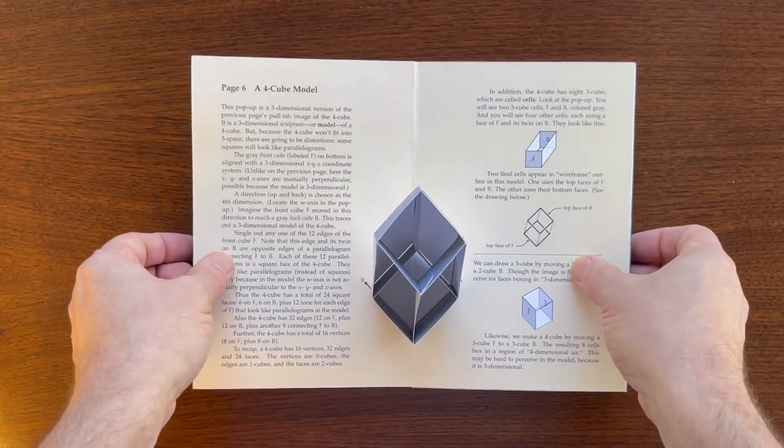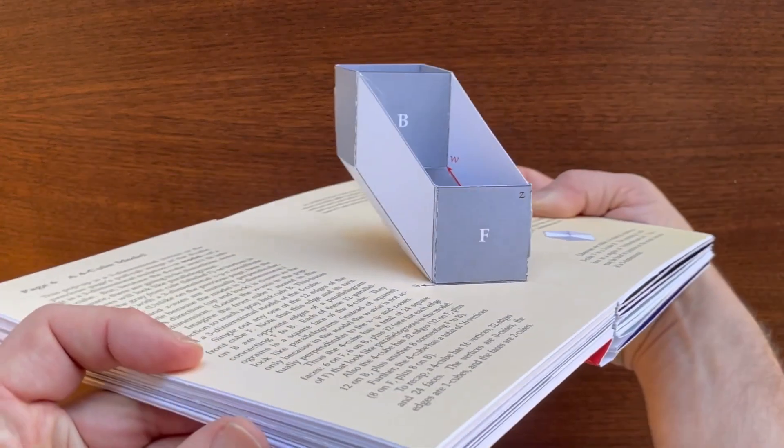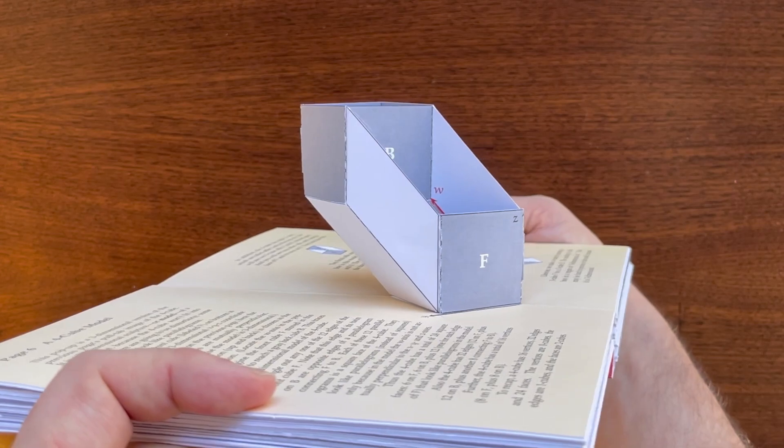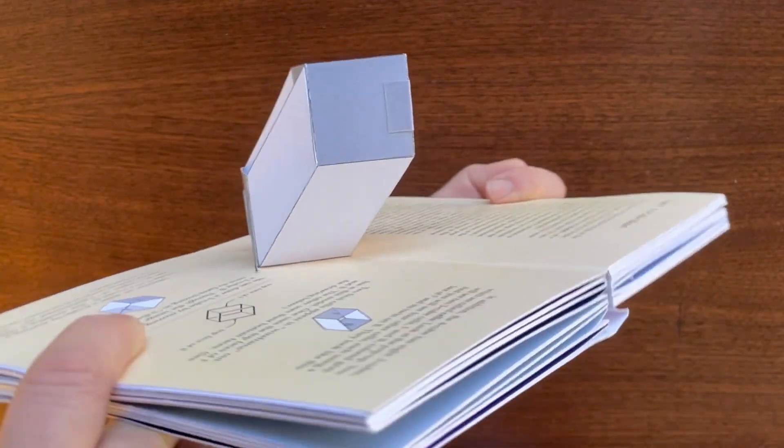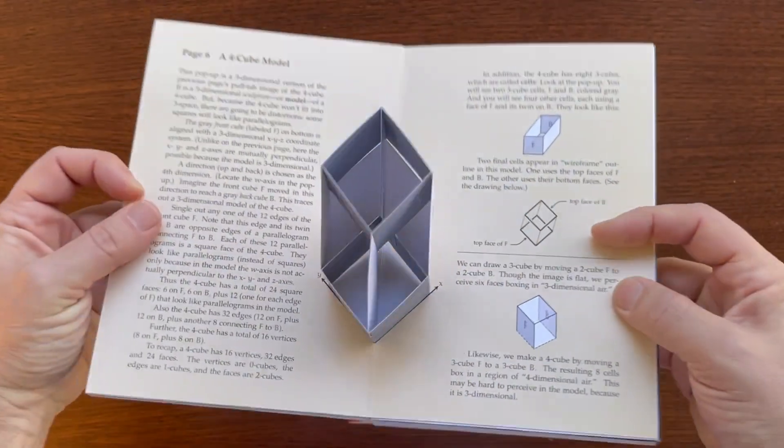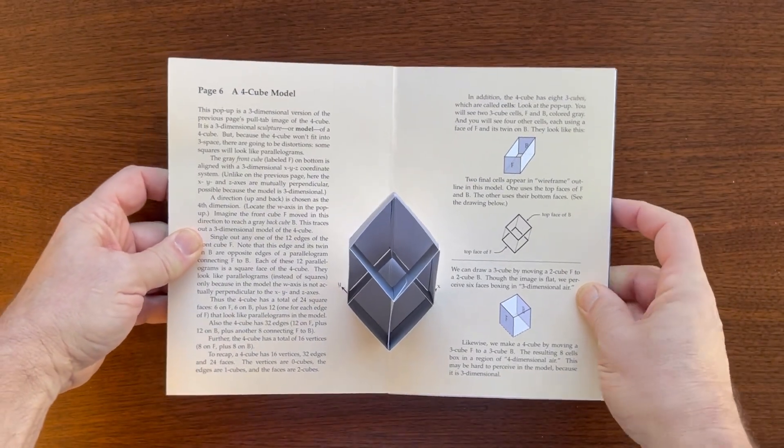Here's a three-dimensional model of what we just saw. A front cube on the bottom connected to a back cube on the top. It's a three-dimensional model of a tesseract.